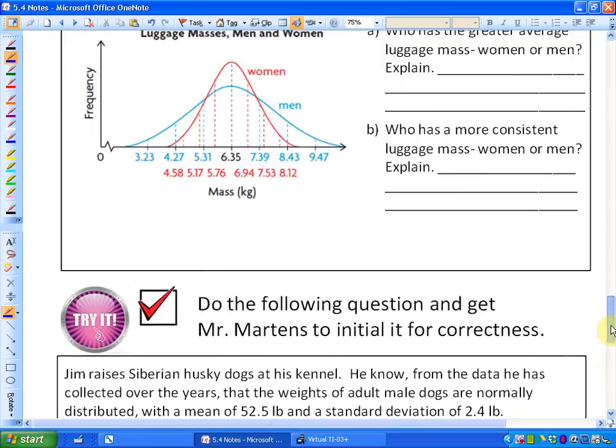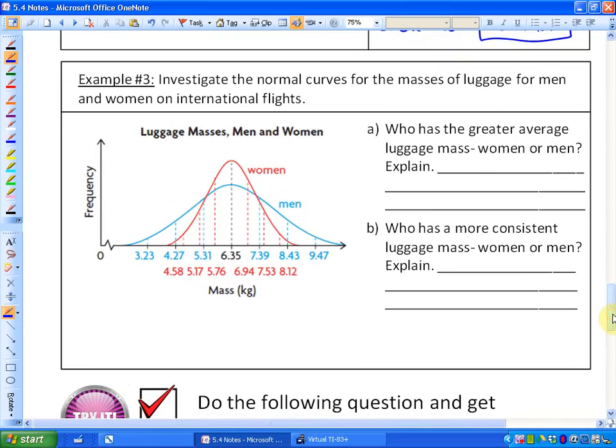So the last particular question here is example number 3. It says investigate the normal curves for the masses of luggage for men and women on international flights. So the women is in red and the men is in blue. It says, who has the greater average luggage mass, women or men? Well, what we'll see here, average is the middle. So if we look at the middle for women, which I'll indicate with a red line, this would be the mean for women, which is average. Okay. The average man, I'll put right in the middle as well, which is right here. It's actually exactly the same. So the mean here, even though the women have a taller particular mean there in this particular case, the mean or average would be exactly the same. So it would be the same.